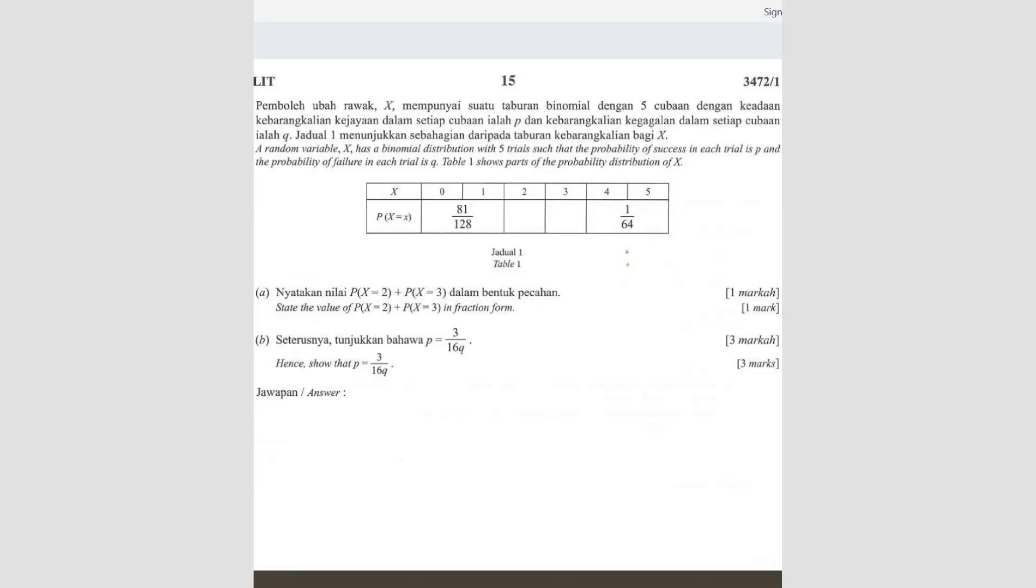Question 12. A random variable X has binomial distribution with 5 trials, so here are the 5 trials. Such that probability of success of each trial is P. So this P is probability of success and probability of failure is Q.